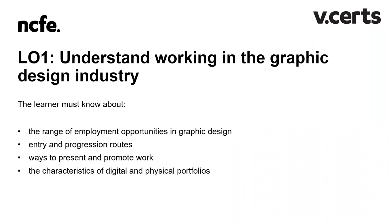For Learning Outcome 1 the learner must know about the range of employment opportunities in graphic design, potential entry and progression routes available to them, ways they could present and promote their own work, and characteristics of digital and physical portfolios. This unit has been designed to be delivered at the end of the qualification — after Units 1, 2 and 3. It is not assessed as part of the external assessment, so it's considered a standalone portfolio unit that can encompass any work learners have already created.